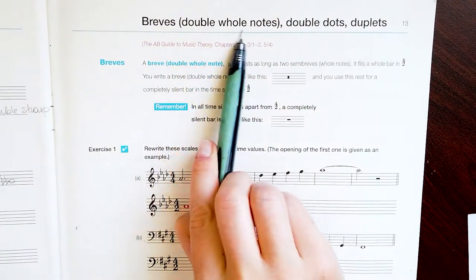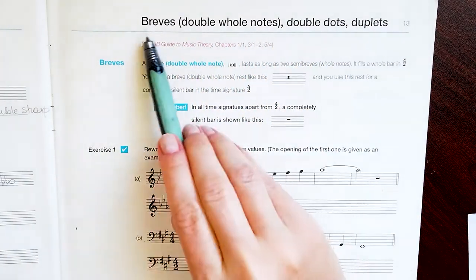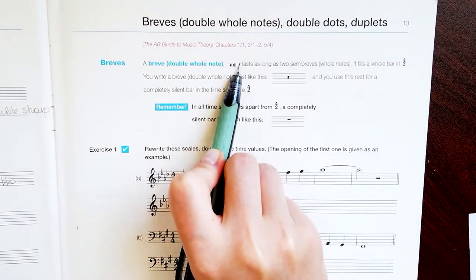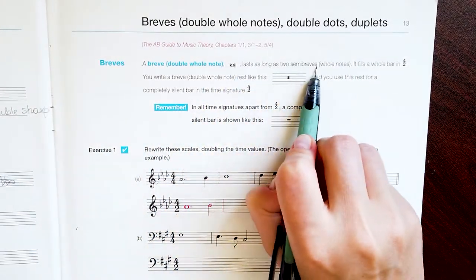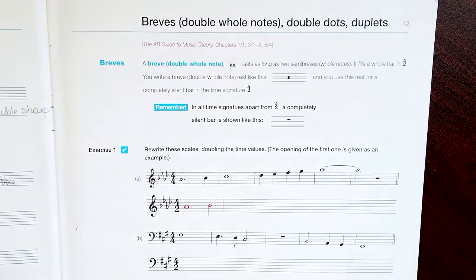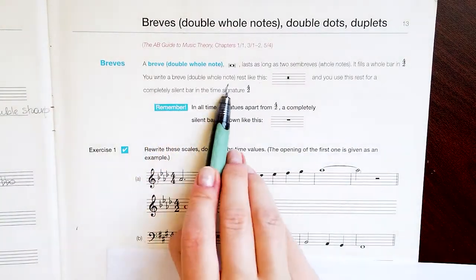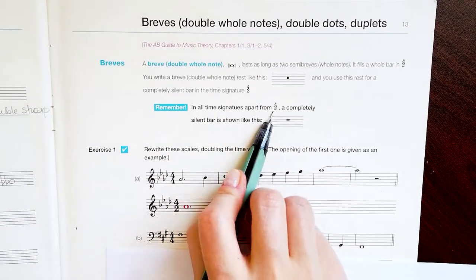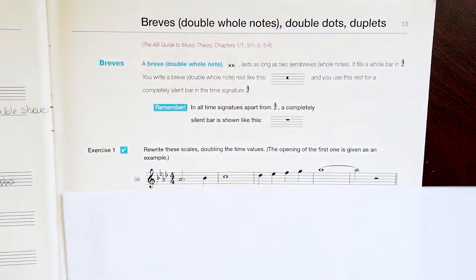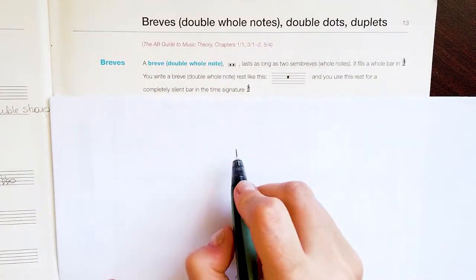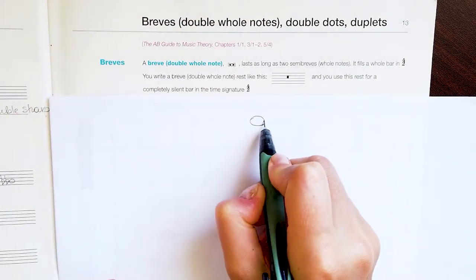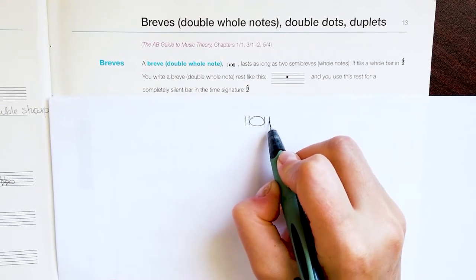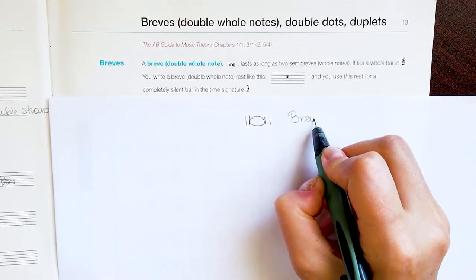Breve notes — double whole notes. The breve is a note which has two vertical lines at the beginning and at the end. It lasts as long as two semibreves. The breve rest is written like this, and it is used in 4/2 time, where a completely silent bar can now be written that way.